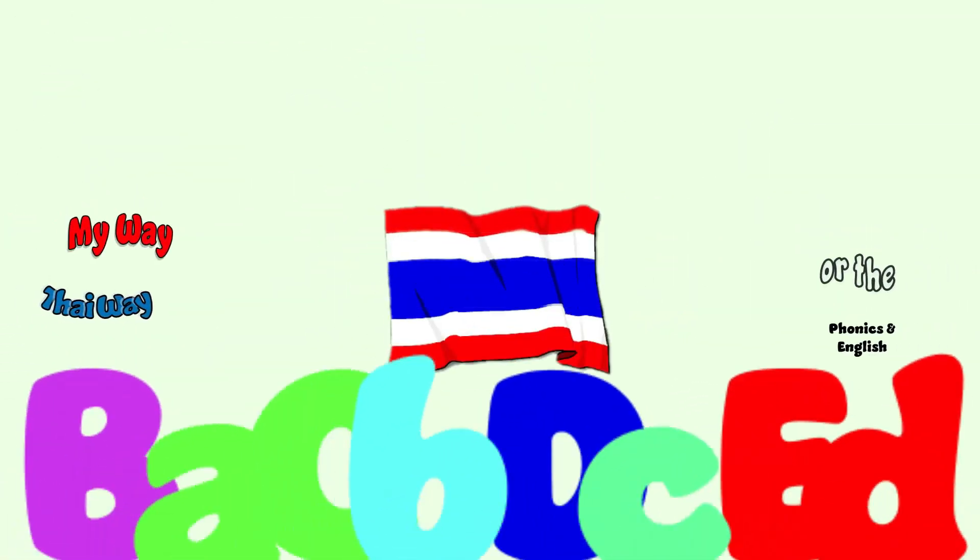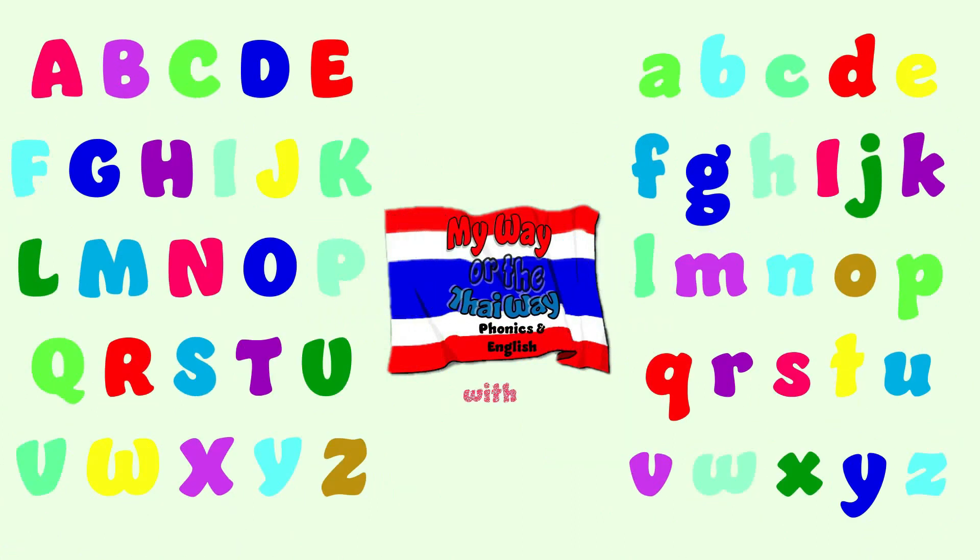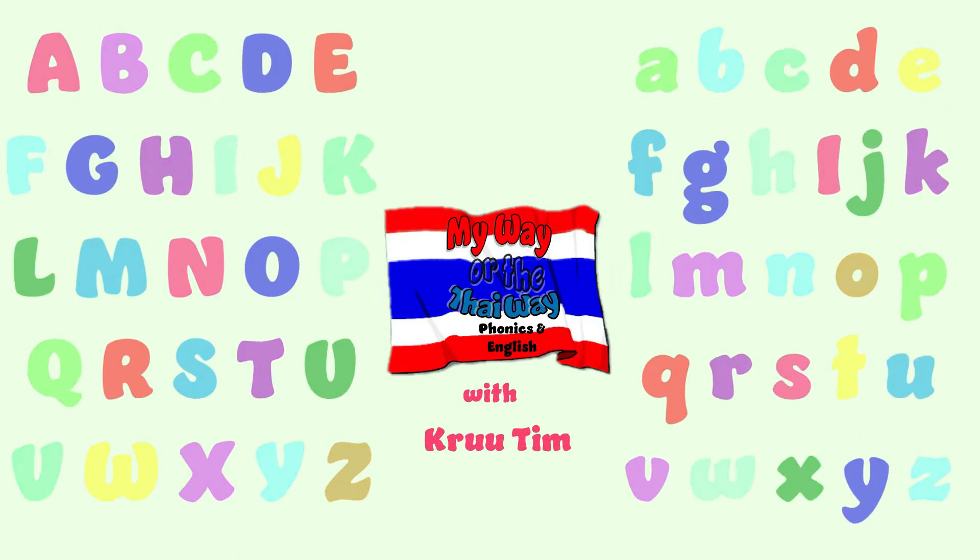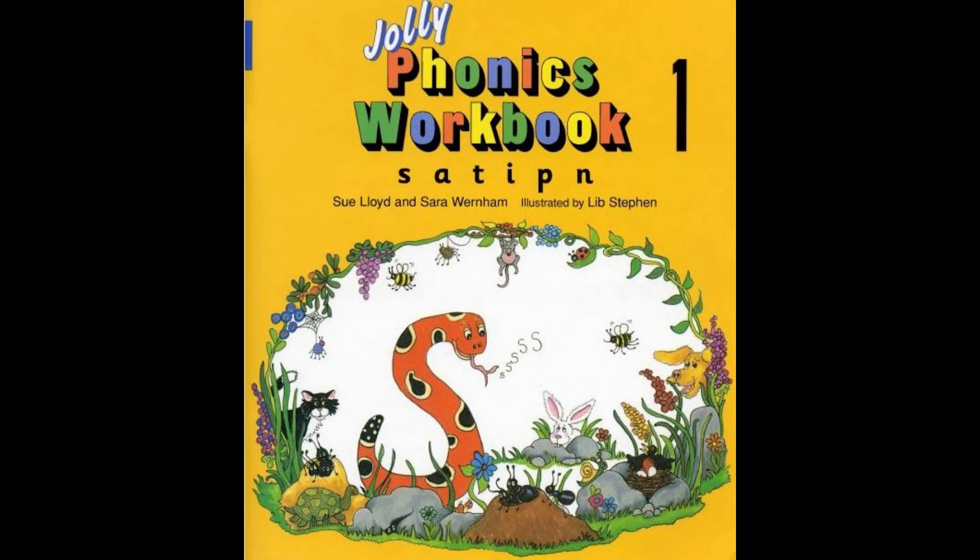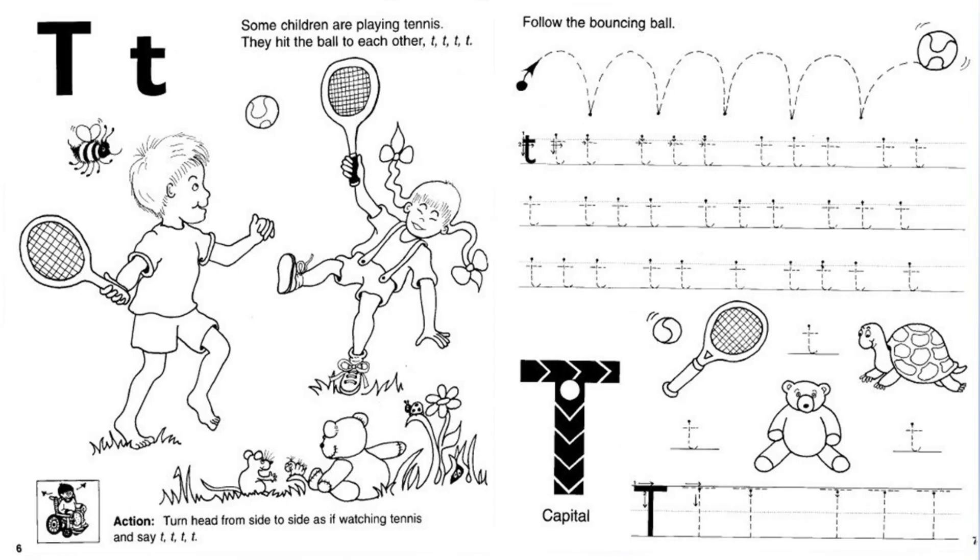My way or the tie way, phonics in English with crew Tim. Hey everyone, welcome back. Today we're going to do our Jolly Phonics Workbook One, the letter T. T sounds like ta ta. So let's go ahead, watch the video, and then we'll start writing. Get your pencil ready.